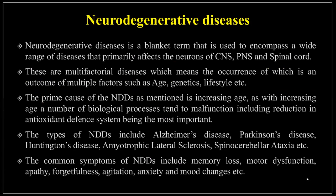I am going to give a brief introduction about neurodegenerative diseases. These are a hypernym used to address a number of diseases that primarily affect the neurons of the central nervous system, peripheral nervous system, and spinal cord. These diseases are multifactorial, meaning their onset is an outcome of multiple factors — including age, genetics, and lifestyle. With increasing age, biological processes tend to malfunction, particularly the antioxidant defense system. Oxidative stress is reported as one of the most important causative factors for the onset of Alzheimer's disease and other NDDs.